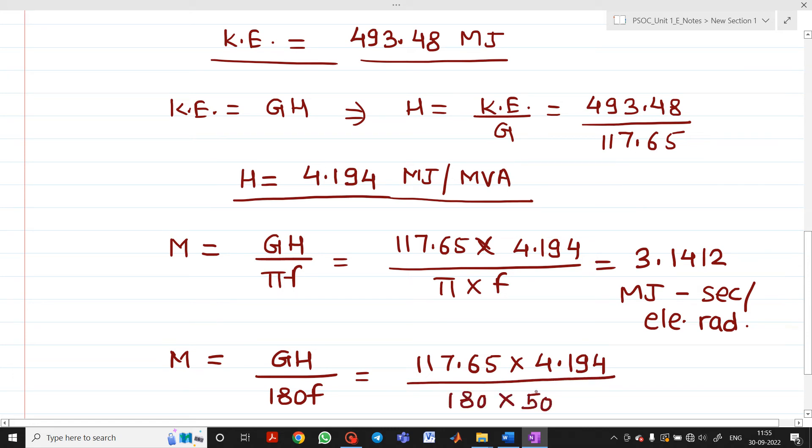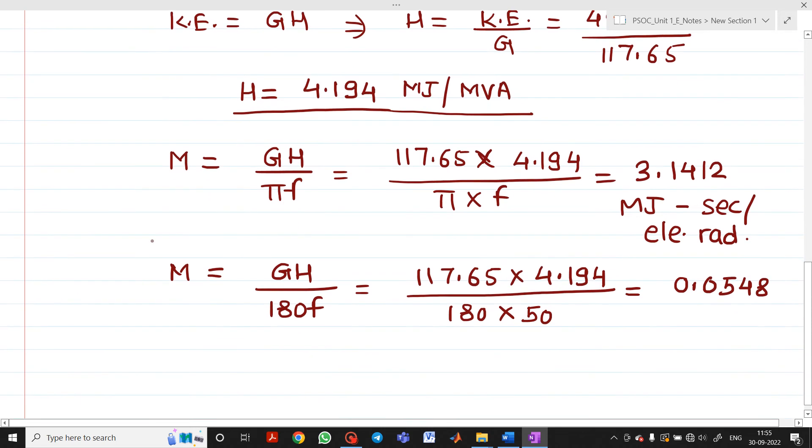If you calculate this you will get 0.0548. The unit for M is mega joule second per electrical degree.